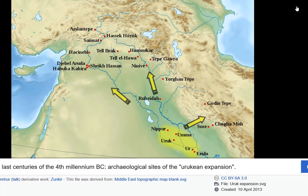Moving on a little further in time: by the mid-fourth millennium, local developments in western Iran, northern Syria, and southern Turkey became fundamentally influenced by southern Mesopotamia. In some places, settlements of urban proportions appeared on virgin soil with a cultural assemblage imported wholesale from southern Mesopotamia, such as Habuba Kabira on the middle Euphrates. It was densely inhabited and a fortified city, and most scholars think that southern immigrants founded these cities as colonies.